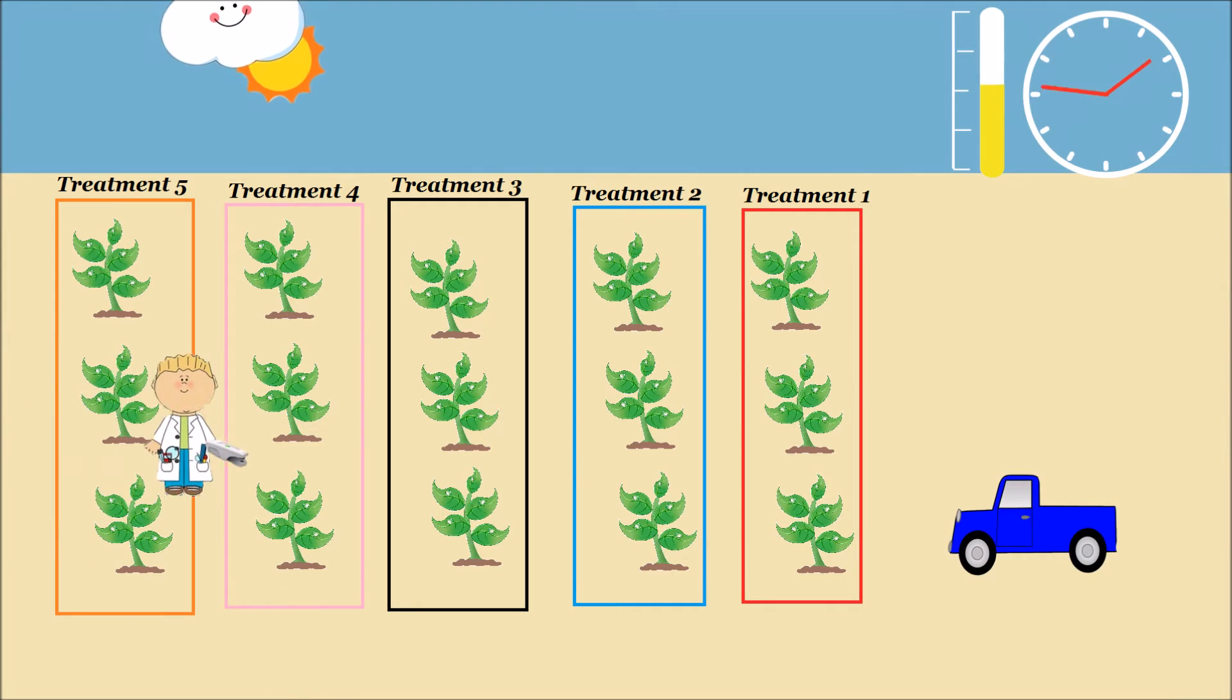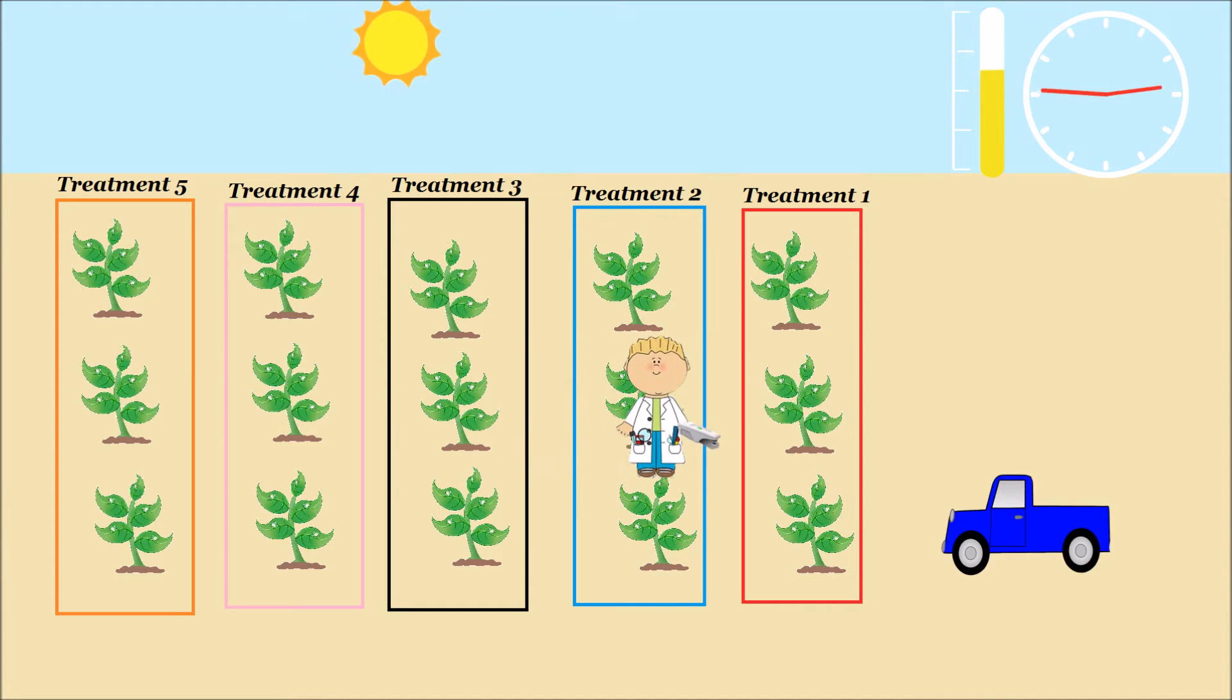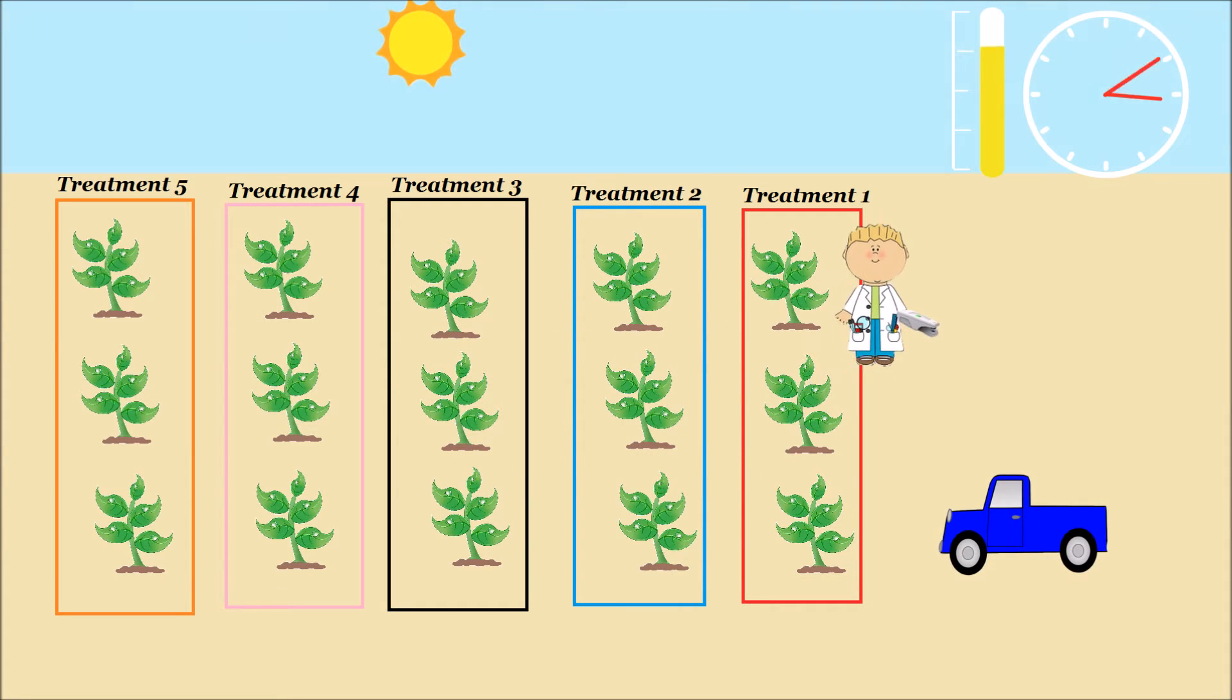If we want to avoid the same problem that we ran into in the first example, we should avoid measuring all the plants from one treatment before moving on to plants from the next treatment.